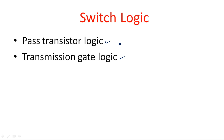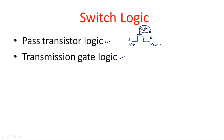Pass transistor logic uses one transistor with a control input at the gate terminal. The source terminal receives the input and the drain terminal provides the output. For an NMOS transistor, when the control input is at logic high (1), the input is transferred to the output. When the control input is 0, there is no output — it acts as an open circuit or high impedance.